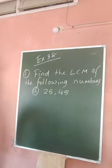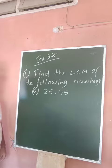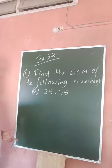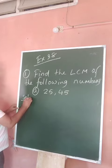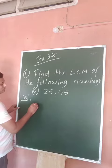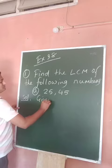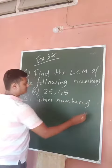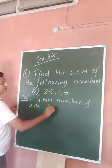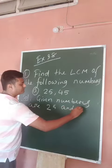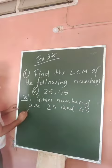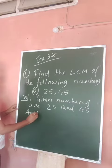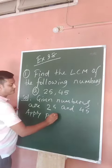Okay, so look at the first question: Exercise 3.8, find the LCM of the following numbers. Number one is 25 and 45. So for the first question I will solve using the prime factorization method. Solution — given numbers are 25 and 45. Applying prime factorization.